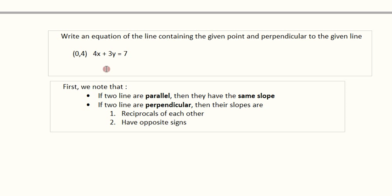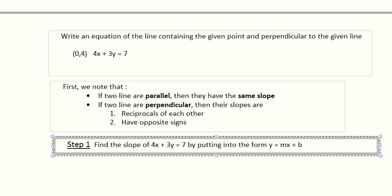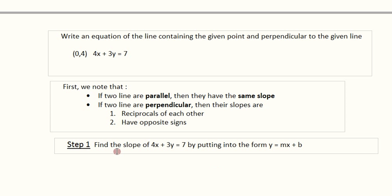Now the line that we're trying to write the equation for is perpendicular to this line. So if we know the slope of this line, then we just have to take the reciprocal of it and change the sign, and we'll know the slope of the line we're trying to find. That's the first step in this problem, to find the slope of the given line.